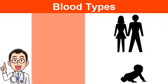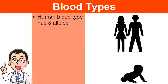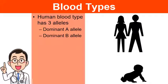Let's look at blood types in more detail. In humans, there are three alleles for blood type: the A allele, which is dominant; the B allele, which is dominant; and the O allele, which is recessive.